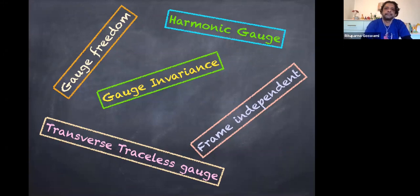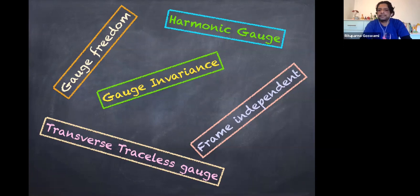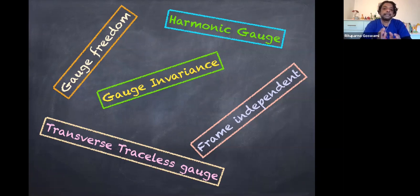Gauge freedom, gauge invariance, frame independence — and then there are different types of gauges: harmonic gauge, transverse, stressless gauge, and so on. So the question is: what are these, and how are they related to cosmological perturbation?